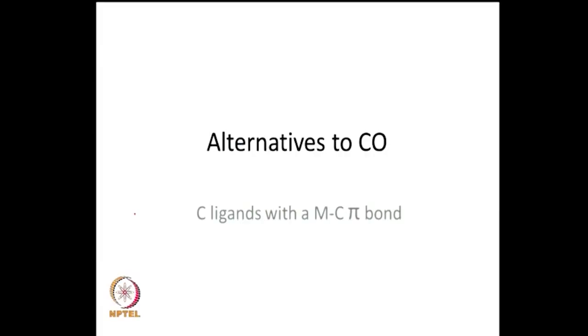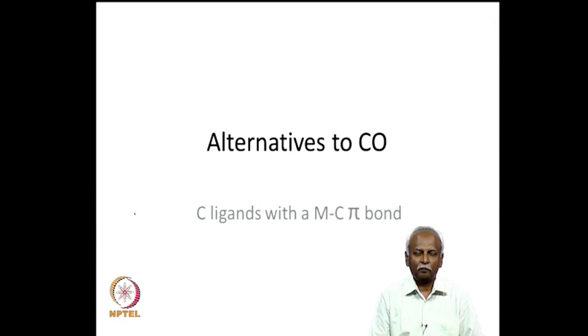This is a lecture on a few ligands which are alternatives to carbon monoxide. We have already seen that carbon monoxide is one of the best ligands in organometallic chemistry because it provides unsurpassed pi bonding character. People have always been looking for alternatives to carbon monoxide because carbon monoxide does not exert a significant steric influence, and it is possible to have specific catalytic properties if you can modify the steric properties of the ligand.